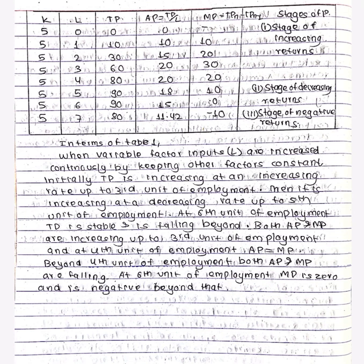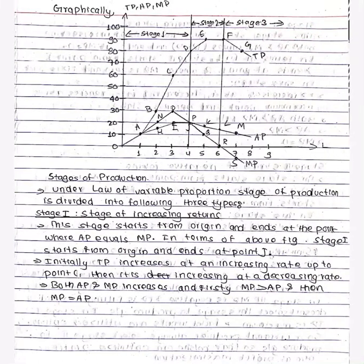MP is equal to AP at a certain unit. In the 4th unit, the previous unit's AP equals MP. Then at a subsequent unit, MP has zero. And MP is negative while AP has zero. At the 6th unit, the total product result is zero but the marginal product result is negative.